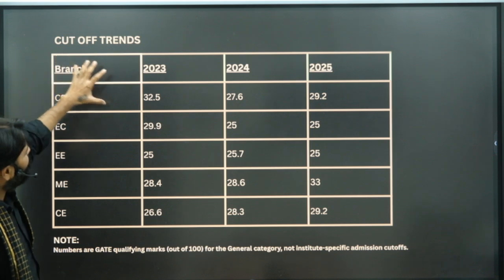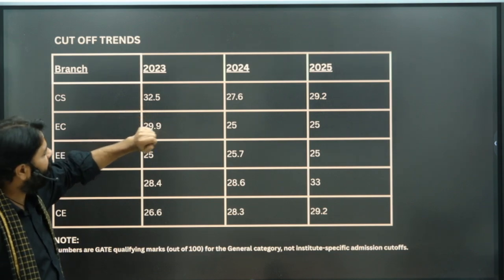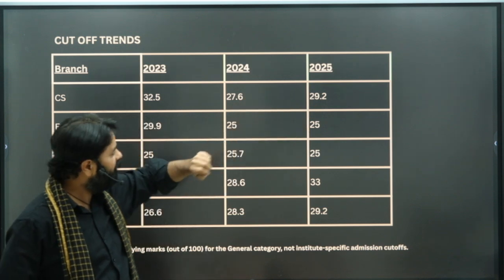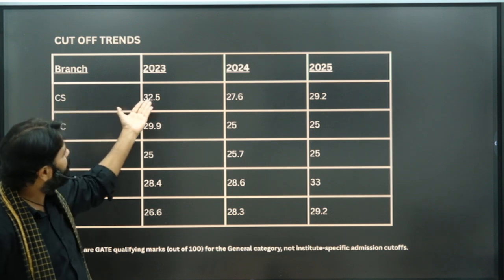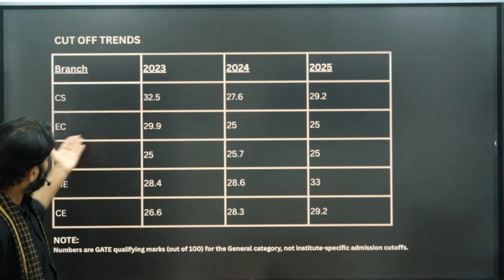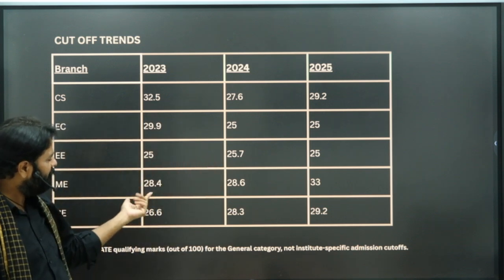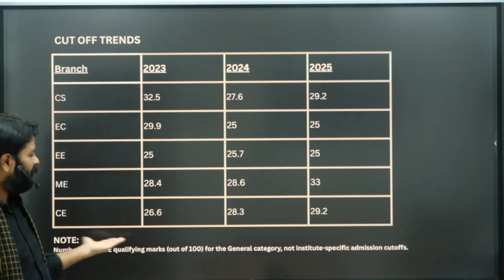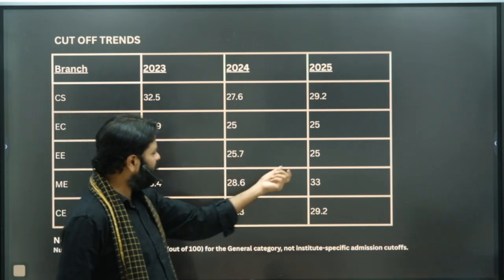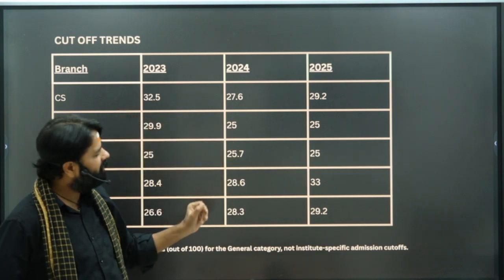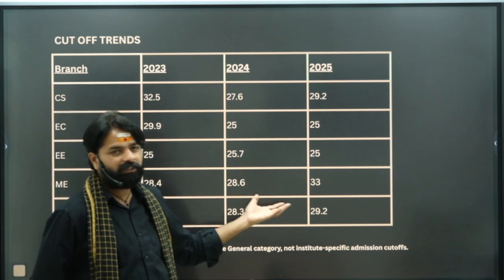Looking at previous years from 2023 to 2025 for Computer Science: the 2023 general cutoff was 32.5, in 2024 it was 27.6, and in 2025 it was 29.2. It is not always the same — CS is highest some years, EC or ME in others. For ME in 2025, it was around 33, and for Civil it was about 29. The trend shows 25 is the minimum and on average 27-28, with 33 being the highest observed overall across the last three years.